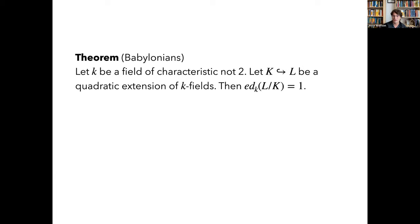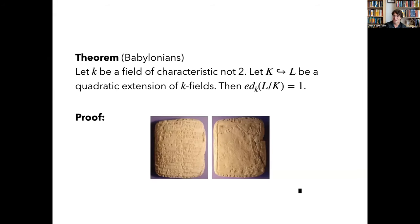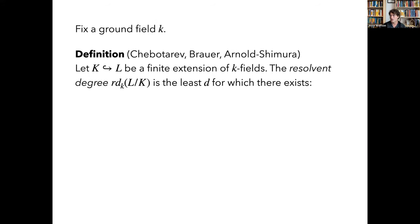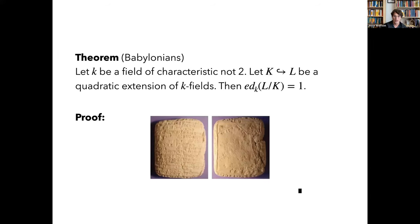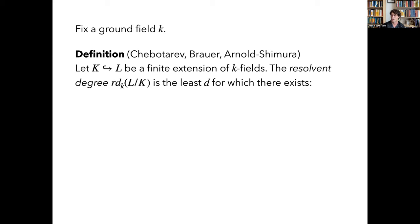So in some sense you're looking at, after a change of coordinates, what's really the transcendence degree of this extension. There's a very old theorem that says that in characteristic not two, any quadratic extension has essential dimension one. The proof is the quadratic formula — here are cuneiform tablets with the quadratic formula on them. So essential dimension asks: if you just have an extension, maybe after changing the coefficients using arithmetic, how can you simplify it? But classically when we're solving polynomials, we introduce square roots, cube roots, or other functions.